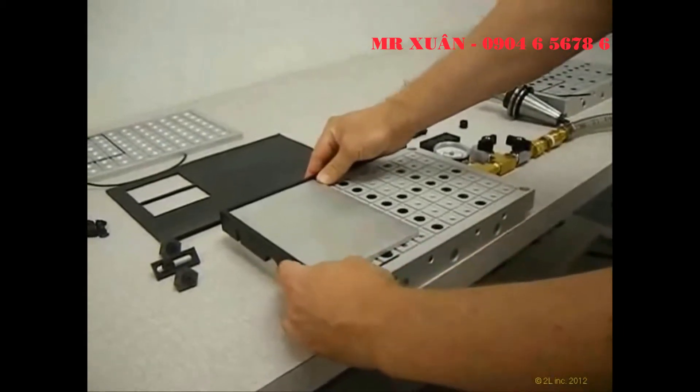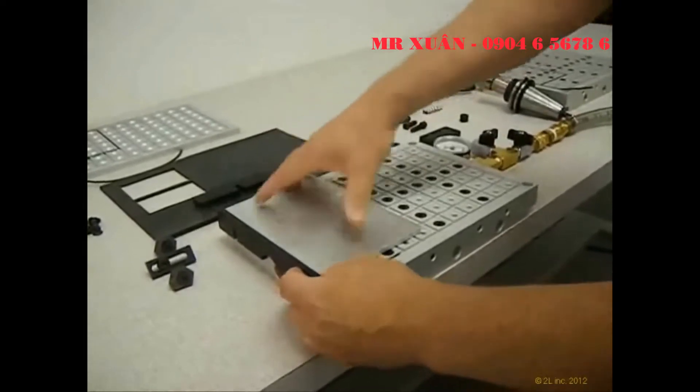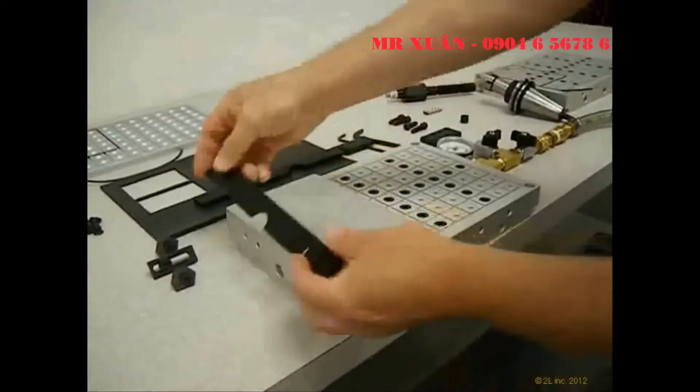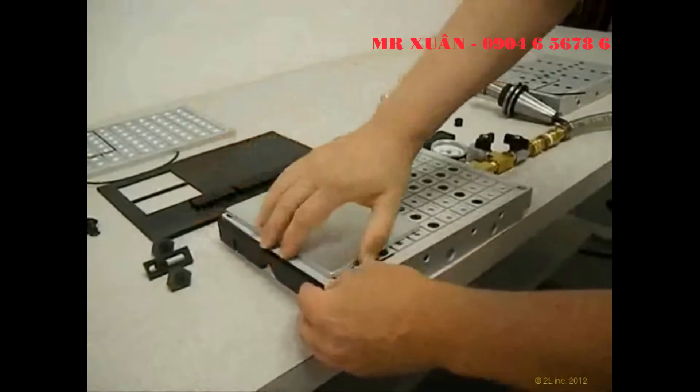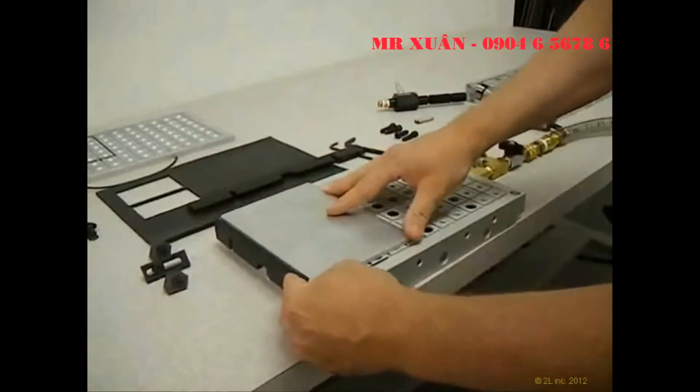What 2L has done to address this issue is we've created end and side work stops that perform several functions. One is it allows you to locate your work piece repeatably on the vacuum chuck table. These are adjustable and they bolt onto the side of the vacuum chuck table, and they can be moved up and down depending on the height of your work piece.